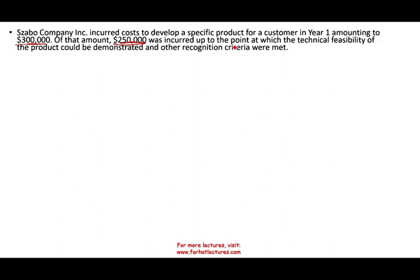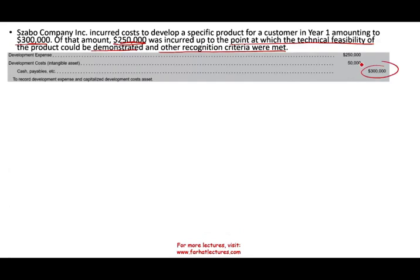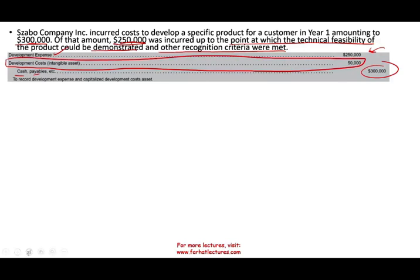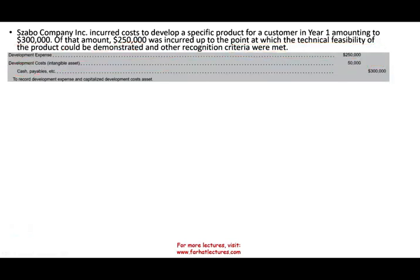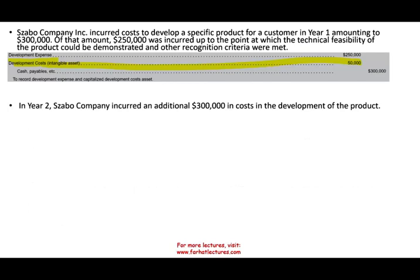Let's take a look at an example from a journal entry perspective. S company incurred costs to develop a specific product for a customer in year one, amounting to $300,000. Of that amount, $250,000 was incurred up to the point where technical feasibility of the product could be demonstrated and other recognition criteria were met. So of the $300,000 incurred in cash or payable, $250,000 was expensed — because they needed to spend that amount until they reached feasibility — and the remaining $50,000 was capitalized as a development cost.